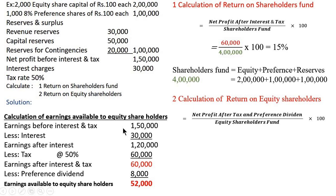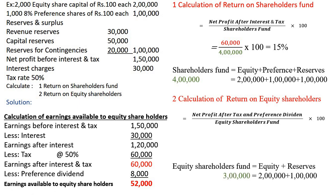For return on equity shareholders fund, we use earnings available to equity shareholders. Starting from earnings after interest and tax of 60,000 rupees, we deduct preference dividend: preference capital is 1 lakh at 8%, giving 8,000 rupees dividend. Deducting 8,000 from 60,000 gives 52,000 rupees — earnings available to equity shareholders. Equity shareholders fund = equity 2 lakh + reserves 1 lakh = 3 lakh rupees. Return on equity shareholders fund = 52,000 ÷ 3,00,000 × 100 = 17.33%.